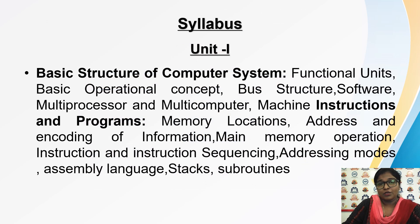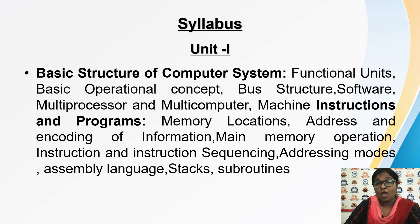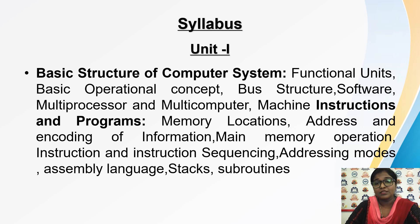In Unit 1, we will see the basic structure of the computer system, which includes functional units — input devices, output devices, memory system, and the central processing unit. Then we'll cover how instructions are executed inside the CPU, the various registers like memory data register and memory address register, and all these components connected via the bus structure — data bus, address bus, and control bus.